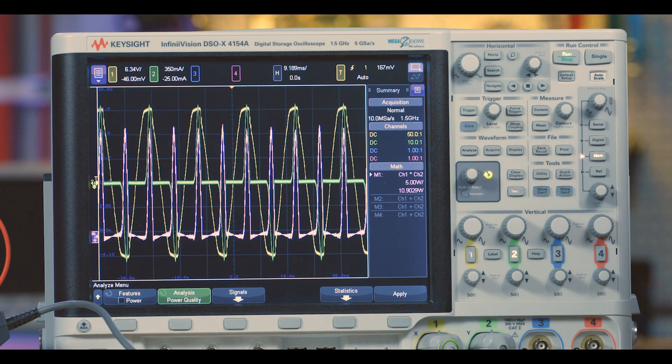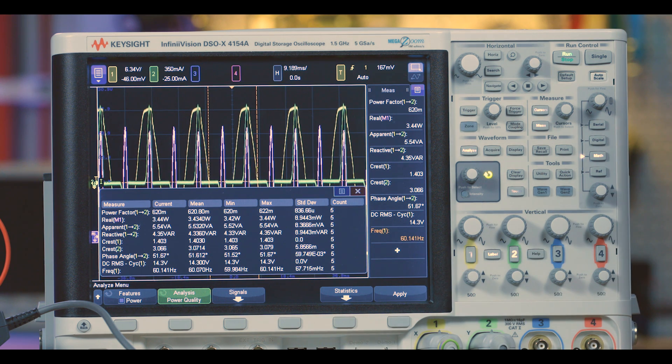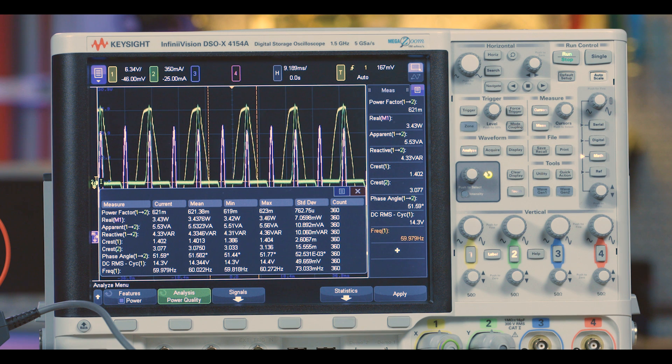We can dive into the details of power quality results here by pressing apply. So the primary advantage of having an automated power measurement application is that these are all calculated for you with the press of a button. You don't waste time working out the math with pencil and paper or having to extract the voltage and current measurement results to calculate power quality on a separate computer.